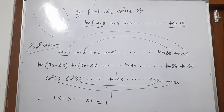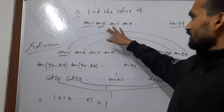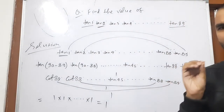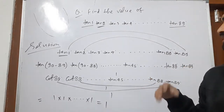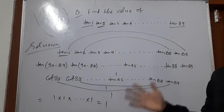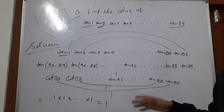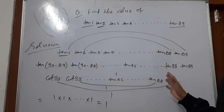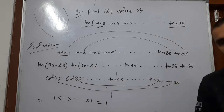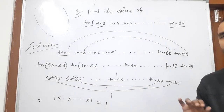We see here the result is 1. Maximum times we get this type of problem with a result of 1. So we can calculate these questions easily, and if we have practiced, then we can solve this type of problem easily.